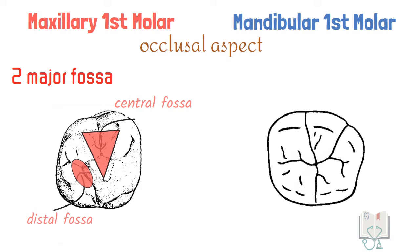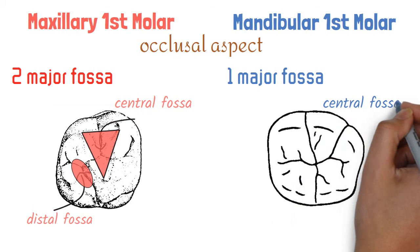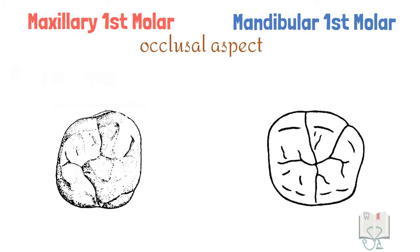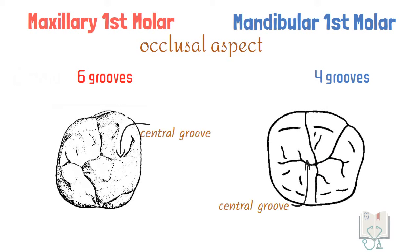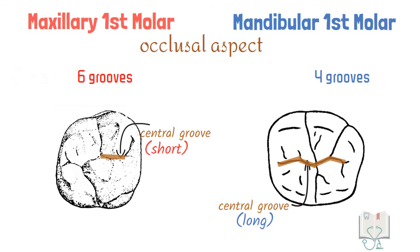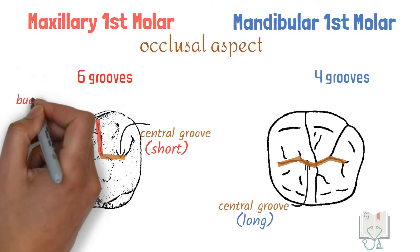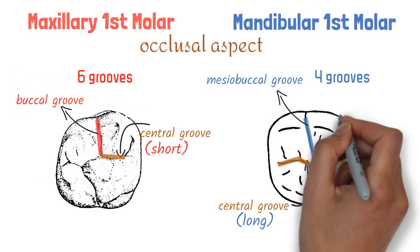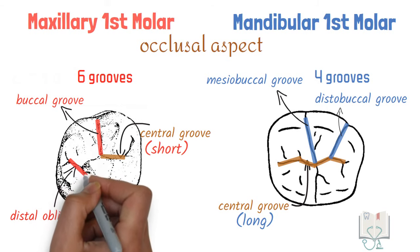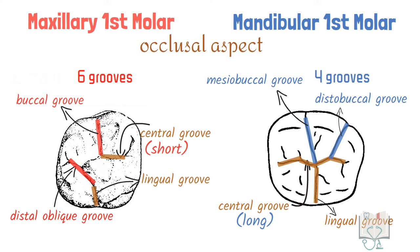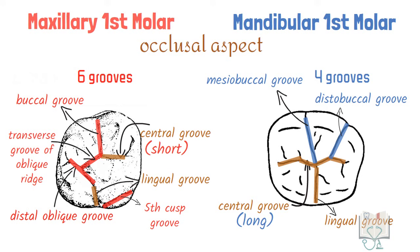In mandibular first molar there are four primary cusps — mesiobuccal, mesolingual, distobuccal, distolingual — and one secondary distal cusp. In maxillary first molar there are two major fossae: the central fossa, which is triangular in shape, and the distal fossa, which is linear in shape; whereas in mandibular first molar there is just one major fossa — the central fossa, which is circular in shape. Coming to the grooves, maxillary first molar has six grooves and mandibular first molar has four grooves. Both first molars have one central groove; however, in maxillary first molar it is small and extends between the central pit and mesial pit, whereas in mandibular first molar it is longer and extends between the distal pit and mesial pit. Maxillary first molar has one buccal developmental groove whereas mandibular first molar has two: mesiobuccal and distobuccal developmental grooves. Maxillary first molar has a distal oblique groove running from the distal pit to the lingual groove, not found in mandibular first molar. Additionally, in maxillary first molar there is a transverse groove of the oblique ridge and the fifth cusp groove, not present in mandibular first molar.